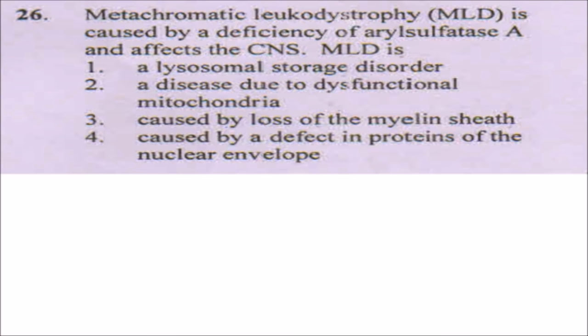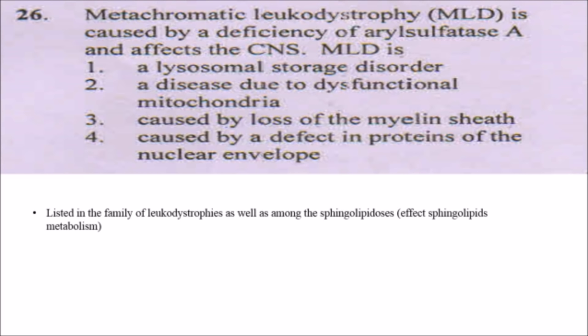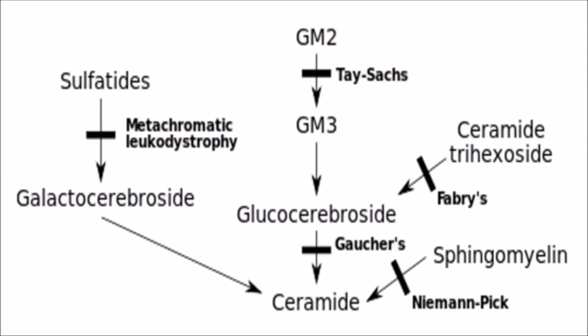Metachromatic leukodystrophy (MLD) is caused by deficiency of arylsulfatase A and affects the CNS. It is actually a lysosomal storage disorder and is listed in the family of leukodystrophies as well as among sphingolipidoses, as it affects sphingolipid metabolism. It is diagnosed with MRI and is inherited in an autosomal recessive manner. Other lysosomal storage disorders include Tay-Sachs, Fabry, Gaucher, and Niemann-Pick disease.